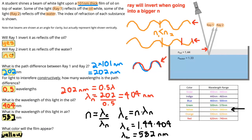Our last step was to use the equation n = λ_air / λ_material to compare the wavelength of light in the oil with the wavelength it would appear in the air once it refracts out. Finally, once we got the wavelength in air, we looked in the table to figure out which color it appears in the end.